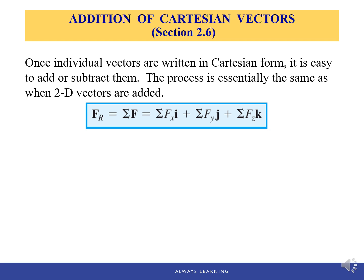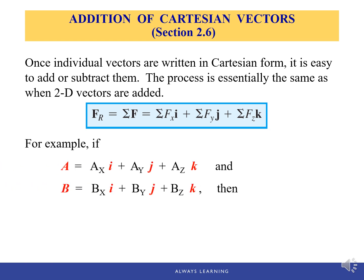It takes three steps. If we have two vectors, vector A and vector B, we can write each vector in Cartesian form — the component form. Now we have three components in 3D: i-hat, j-hat, and k-hat components. The resultant vector, or the sum of those two vectors, will be the sum of the corresponding components.